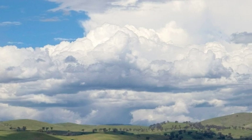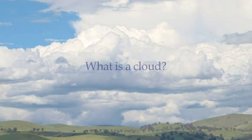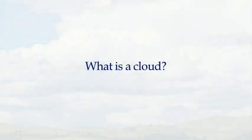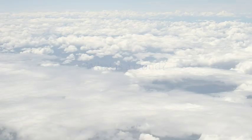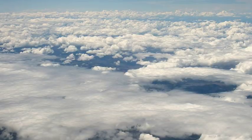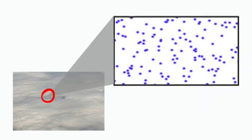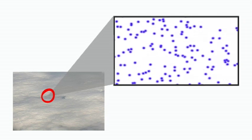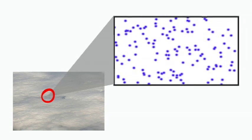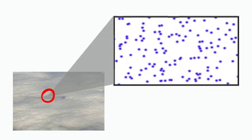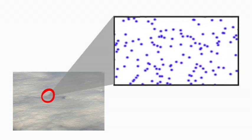So what exactly is a cloud? A cloud is a large collection of very tiny droplets of water or ice crystals. The droplets are so small and light that they can float in the air.